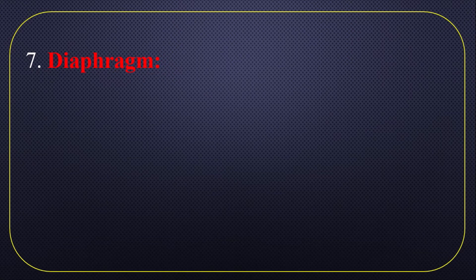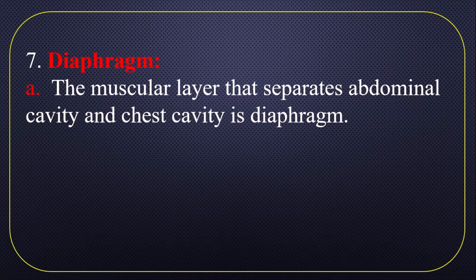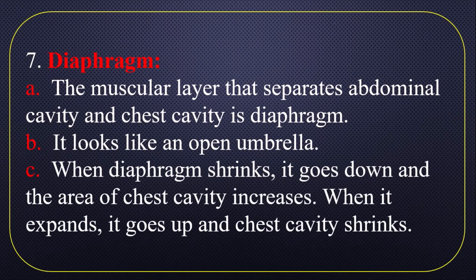Diaphragm: the muscular layer that separates the abdominal cavity and chest cavity is the diaphragm. The diaphragm acts as the boundary of our chest cavity. It looks like an open umbrella. When the diaphragm sinks, it goes down and the area of the chest cavity increases. On the other hand, when it expands, it goes up and the chest cavity shrinks.